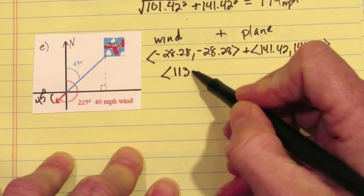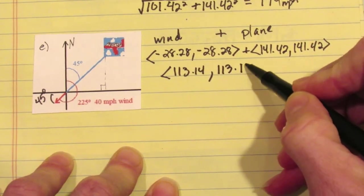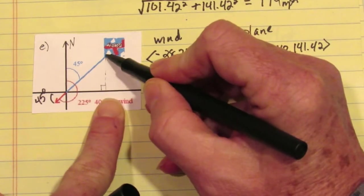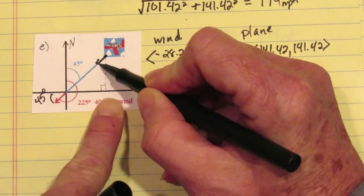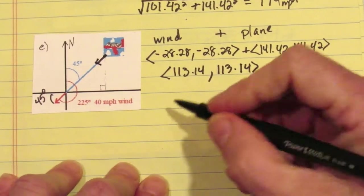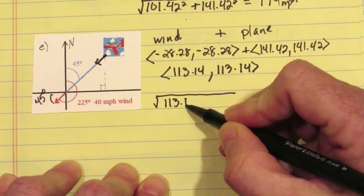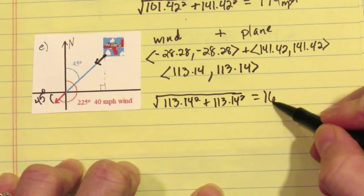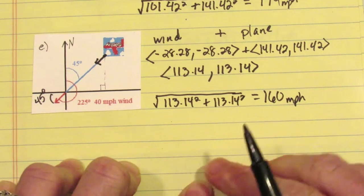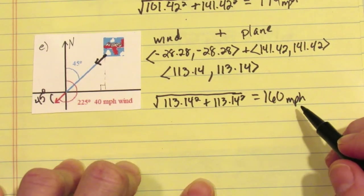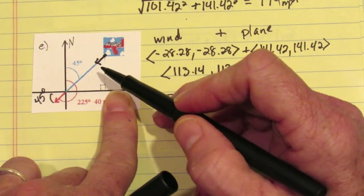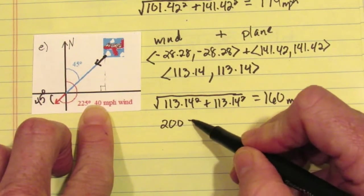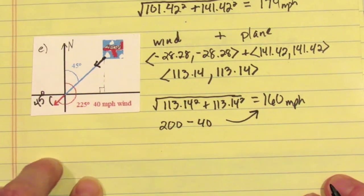Adding these together, we get 113.14 for both x and y, because we're subtracting 28.28 from 141.42. Picture stacking the wind vector at the end — you're pushing the plane backwards down its own path. Finding the magnitude using the Pythagorean theorem, you should get 160 miles per hour. The wind blowing in the exact opposite direction simply subtracts 40 from the plane's velocity of 200. 200 minus 40 gives a resultant of 160 miles per hour.